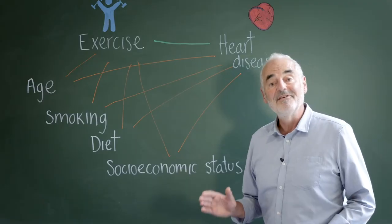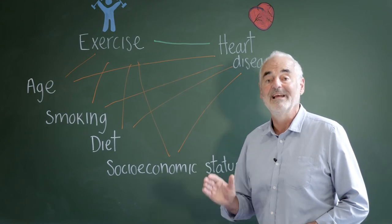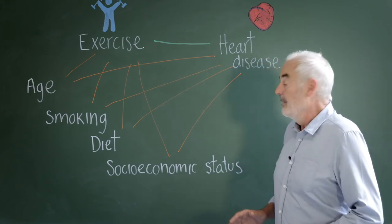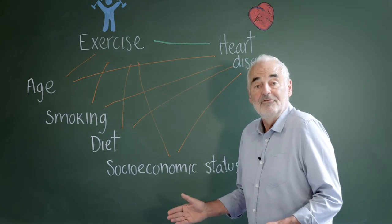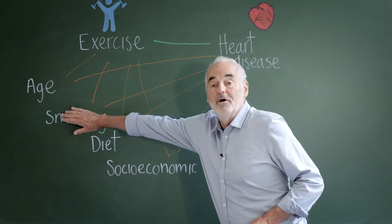But it's important to remember that adjustment is always inadequate. There may be confounders that we just haven't measured. For example, we might not know smoking status.